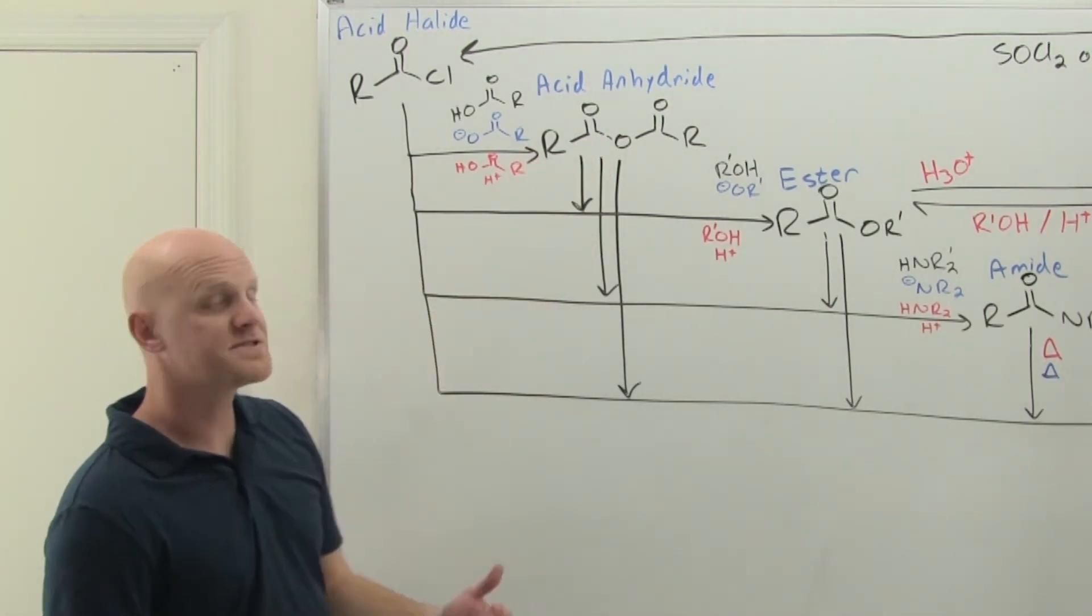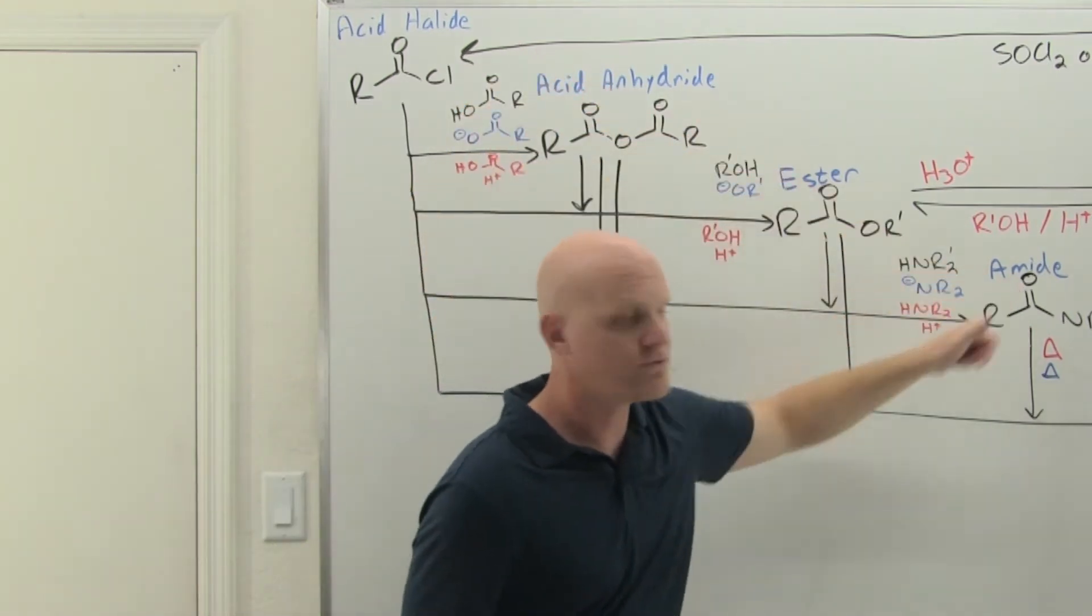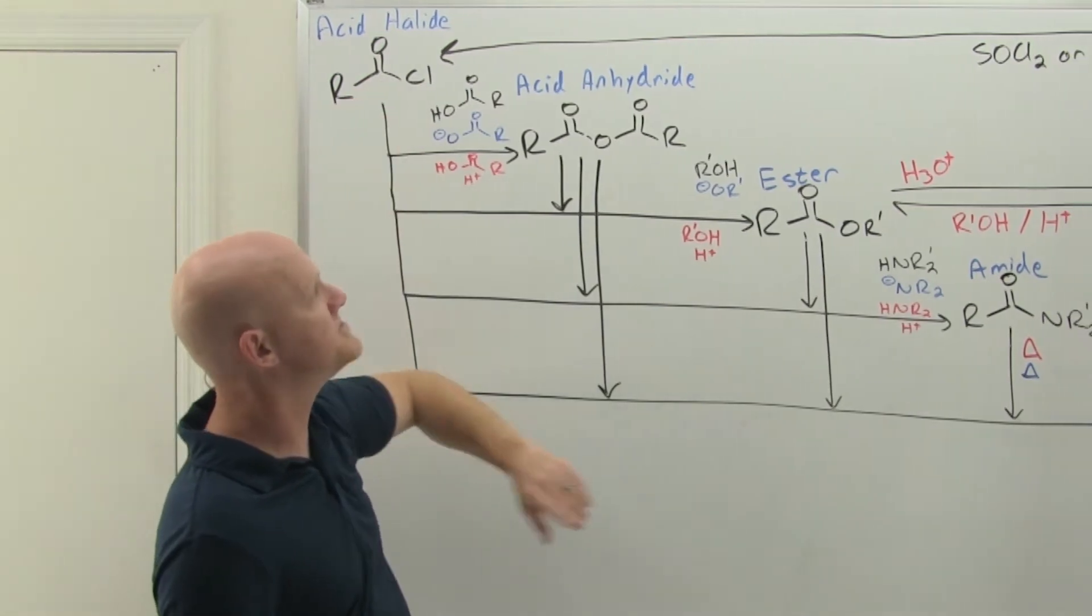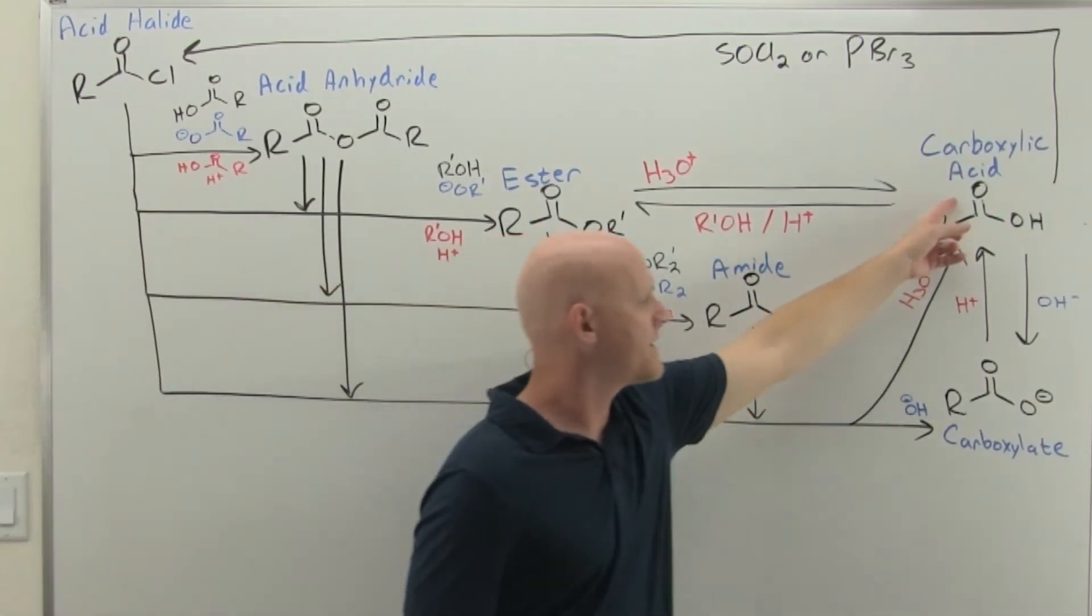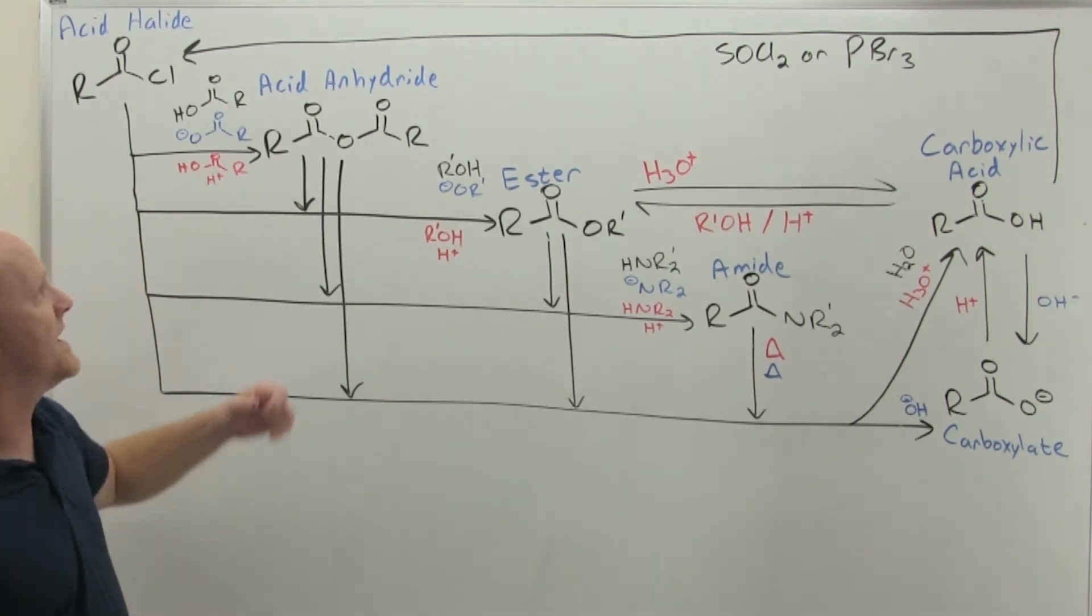As far as the reactions of the anhydride, you can always convert the anhydride into the less reactive carboxylic acid derivatives. You can't turn it directly into an acid chloride, but you can make an ester and amide, a carboxylic acid or a carboxylate. That's the first four reactions for your acid anhydrides.